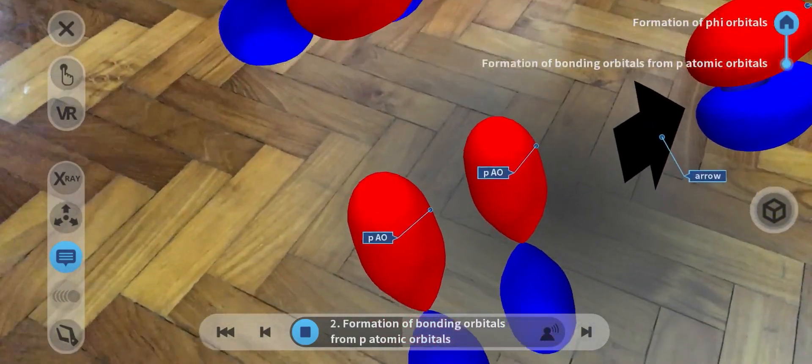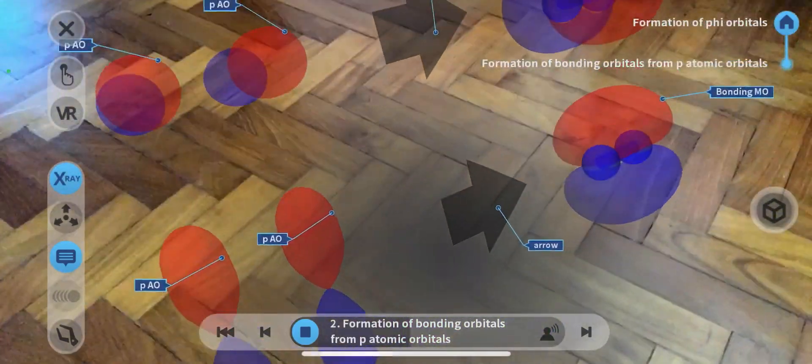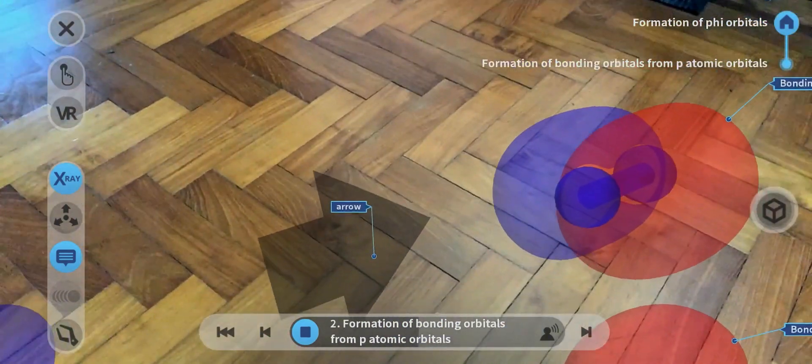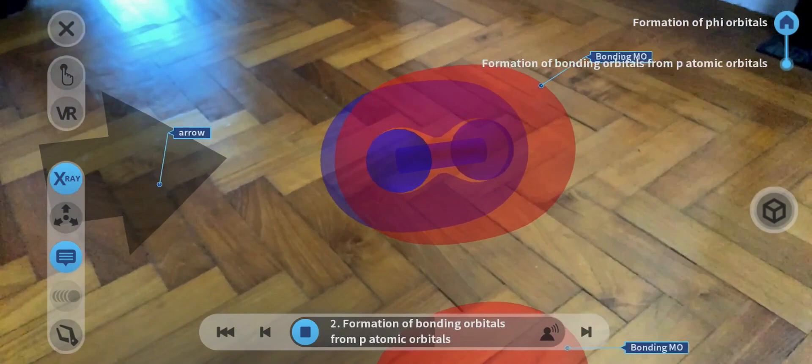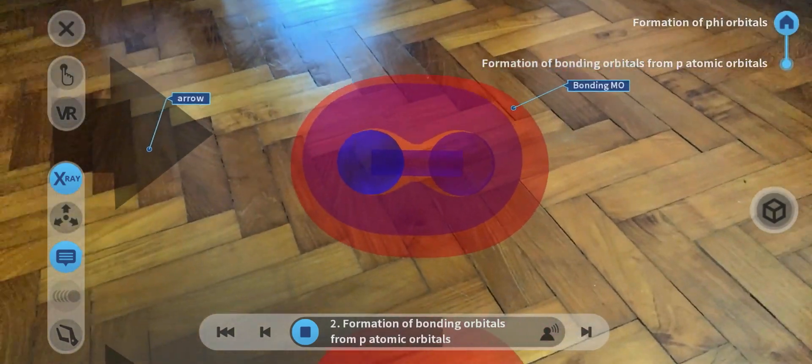Use the x-ray function to see the two atoms that make up your molecule. Then you can see the bonding orbital position relative to the molecule.